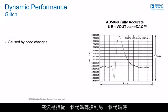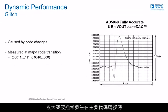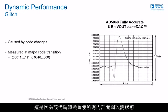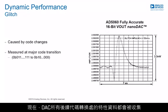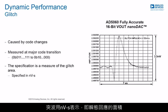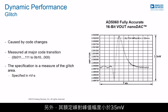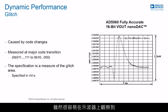Glitch is a transient response observed on the output when transitioning from one code to another. The maximum glitch typically occurs during a major code transition from 01111 to 10000 or vice versa, because this code transition causes all internal switches to change state. Characterization data is now gathered on all successive code transitions for our DACs. Glitch is specified in nanovolt-seconds, which is the area of the transient response. In the case of the AD5060 nano DAC, this is specified as being less than 3 nanovolt-seconds. The peak-to-peak amplitude is also specified, in this case being less than 3.5 millivolts. The important point to emphasize is that the glitch is a very short duration, and while it may be easily observed on an oscilloscope, the end application may well have a much slower response time, so the glitch is invisible to the system.